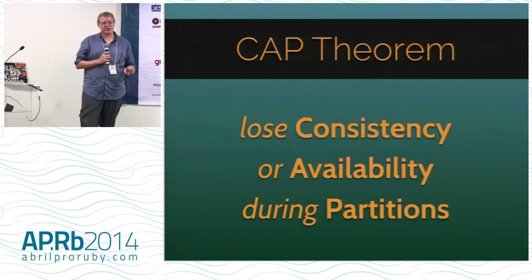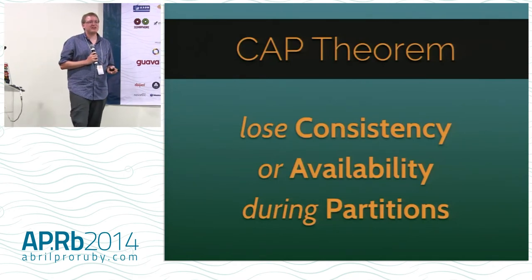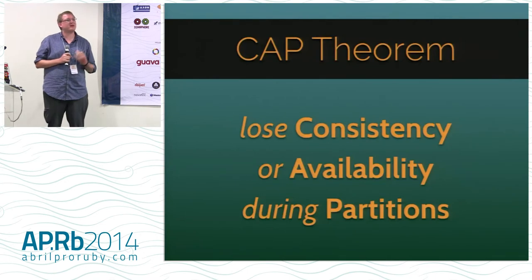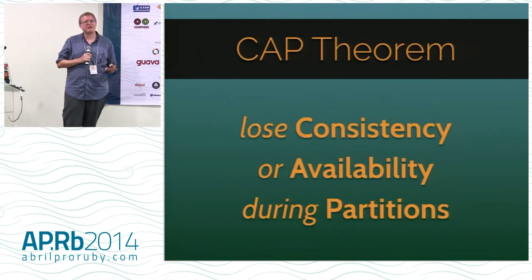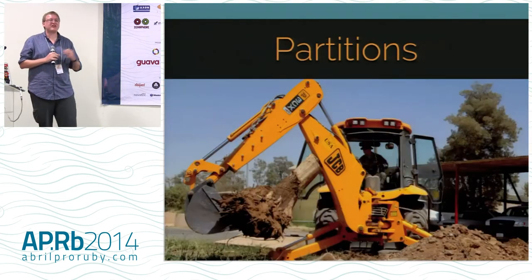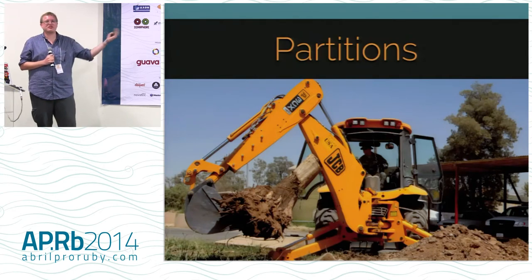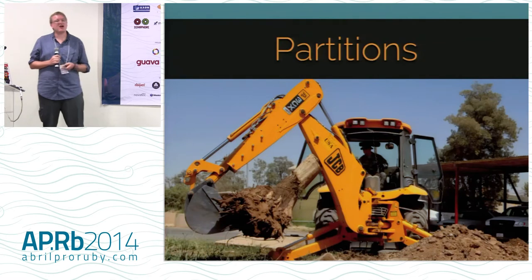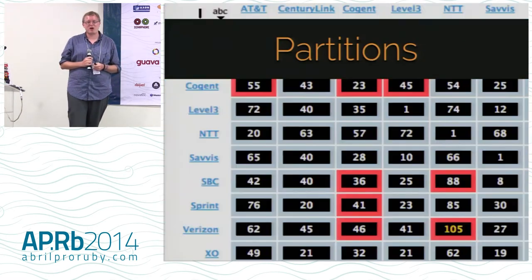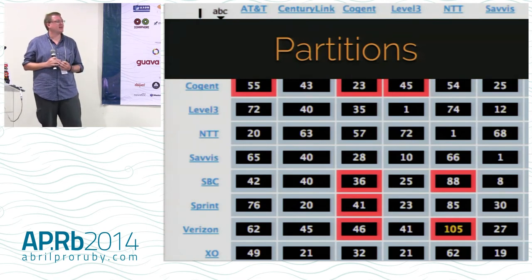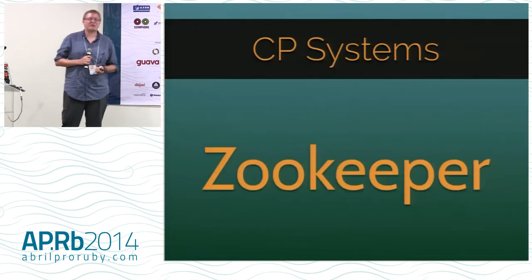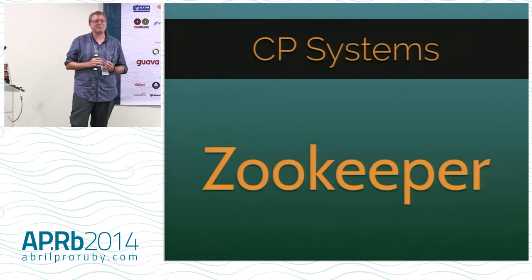The CAP theorem: consistency, availability, partition tolerance. Every system has partitions — sometimes dramatically, like construction equipment cutting a fiber optic line, but more commonly the internet just gets sad at a huge scale with a little bit of latency or packet loss. When talking about systems affected by the CAP theorem, you have AP — available and partition tolerant — or CP — consistent and partition tolerant.